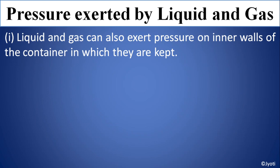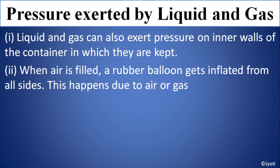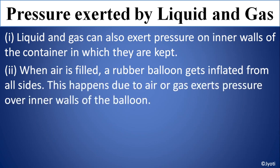Humko pata hai ki hum kisi container mein agar ek solid cheez rakhenge to solid ka jo shape hai wahi dikhega, kyunki solid ka shape fixed hota hai. Lekin agar container mein koi liquid lenge ya paani lenge, to us liquid ka shape container ka jo shape hai wahi le lega. Usi tarah gas bhi container ka shape le leti hai. Ab humko jaanna hai ki yeh liquid ya gas, agar hum kisi container mein lein, to pressure exert karta hai ya nahin. When air is filled into a rubber balloon, it gets inflated from all sides — this happens because air or gas exerts pressure on the thin wall of the balloon.